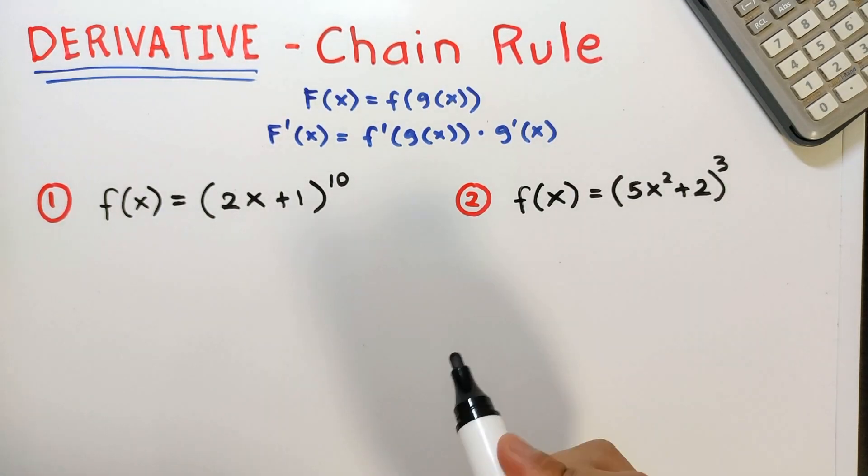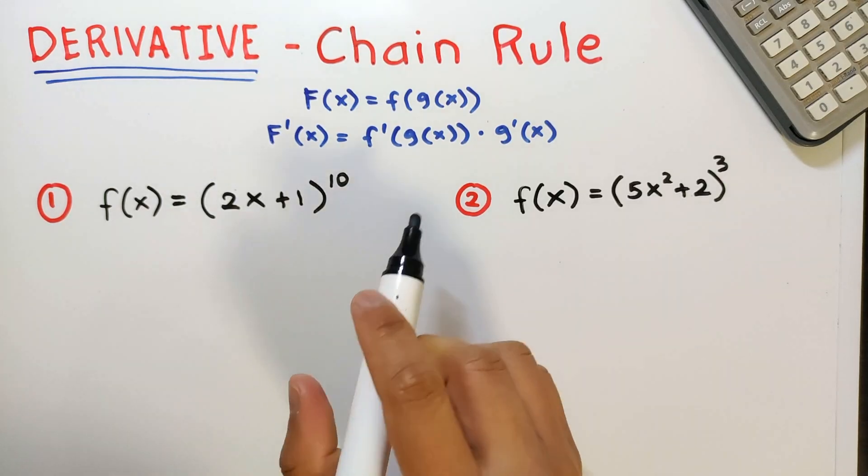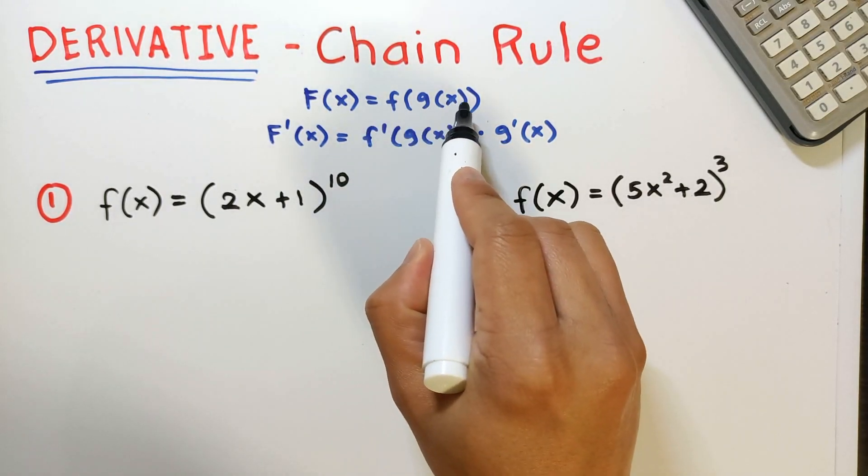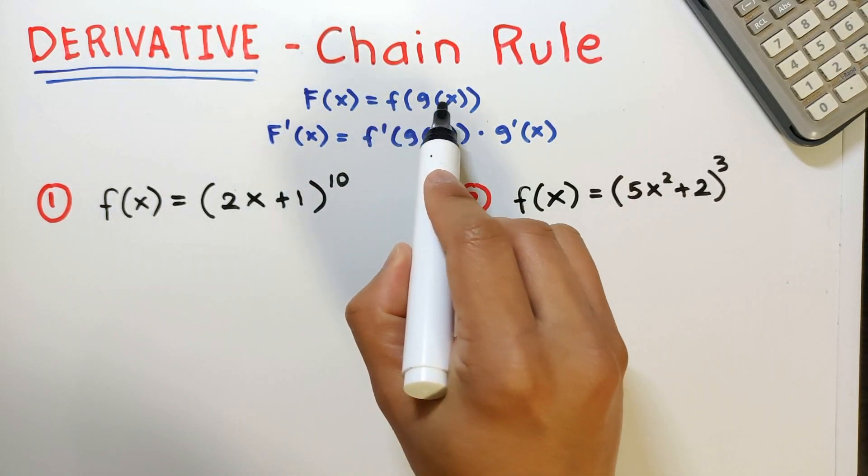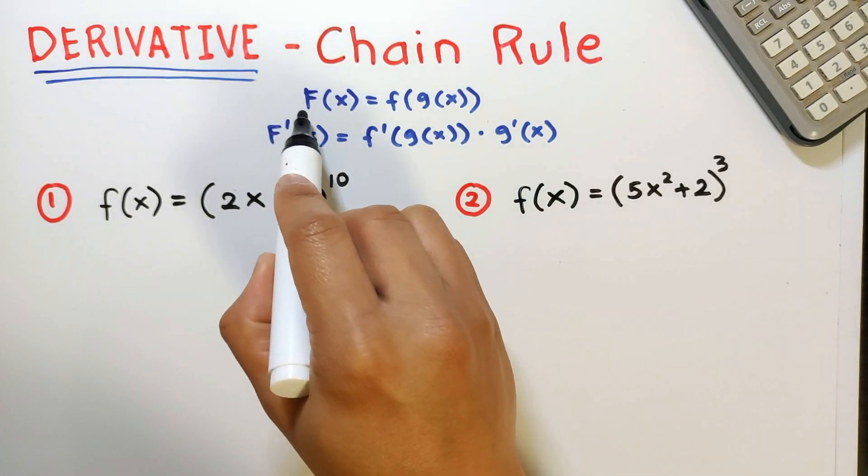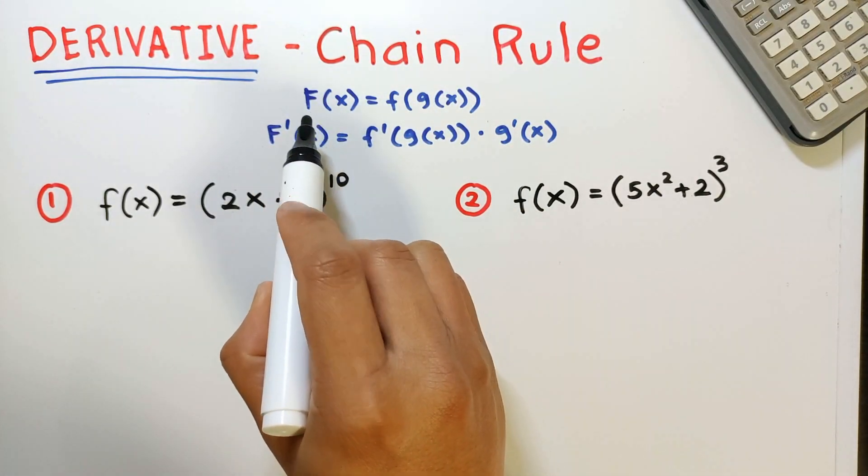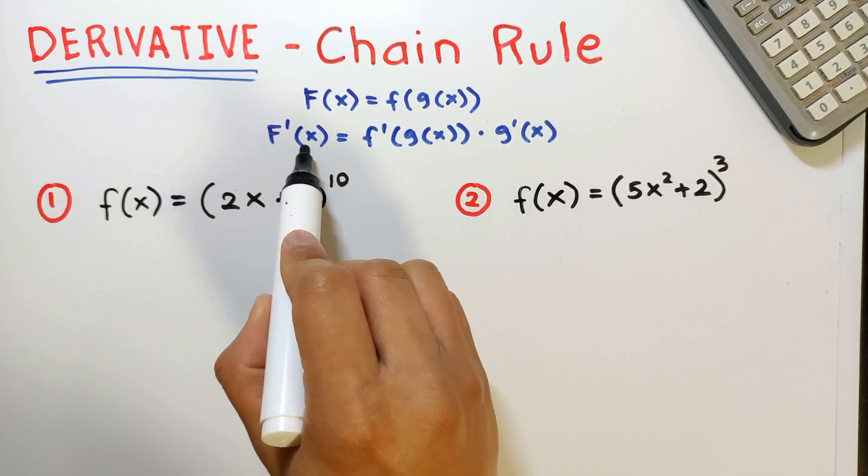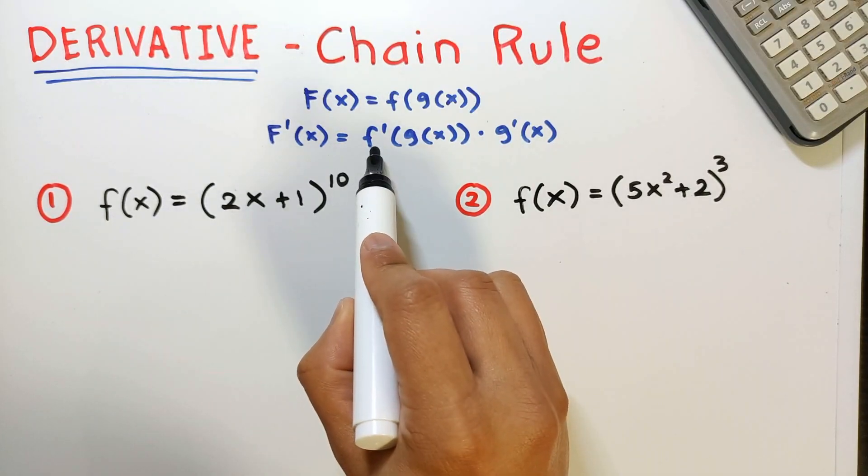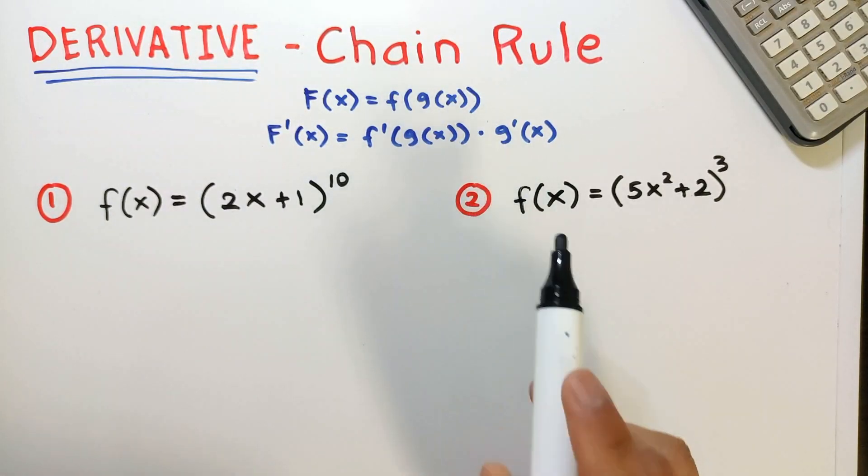The chain rule is a fundamental concept in calculus used to differentiate composite functions such as f of g of x. If we will let this be equal to capital letter F of x, then its derivative denoted as f prime of x is f prime of g of x times g prime of x.